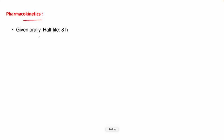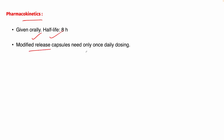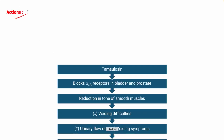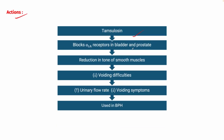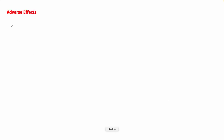Pharmacokinetics of tamsulosin: given orally, half-life is 8 hours. Modified-release capsules need only once-daily dosing, taken in the morning with food. When administered, it blocks alpha-1a receptors in the bladder and prostate, reducing smooth muscle tone, thereby decreasing voiding difficulty, increasing urinary flow rate, and decreasing voiding symptoms. Therefore it is used in BPH.